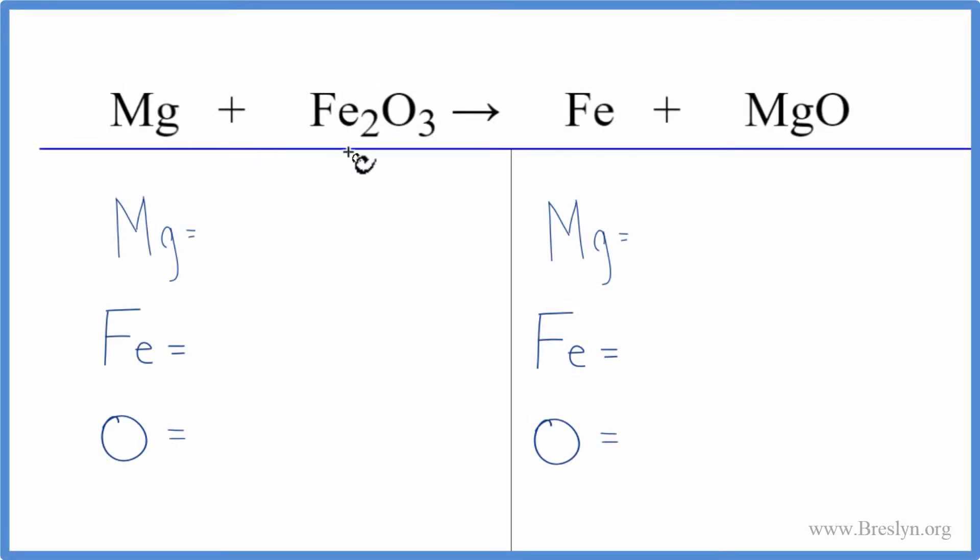In this equation, we have magnesium plus iron three oxide. So to balance it, let's count the atoms up on each side.